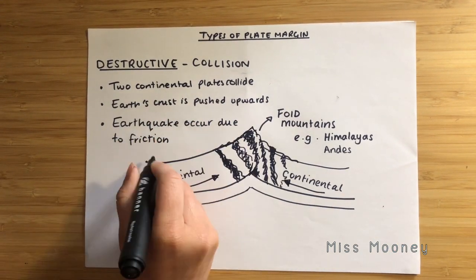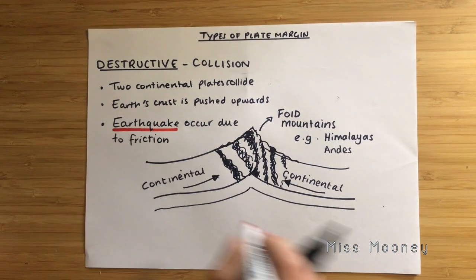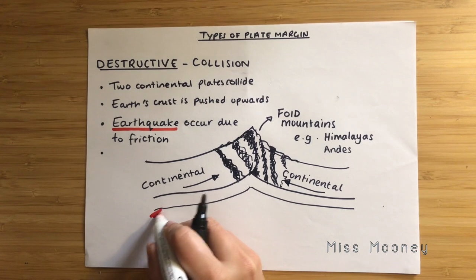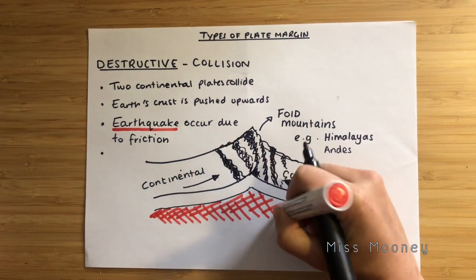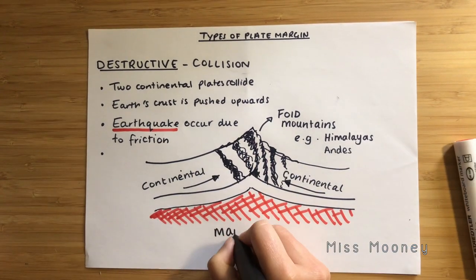To summarise: it's quite a straightforward one. Two plates of similar density collide, crumpling upwards and creating fold mountains.